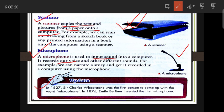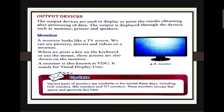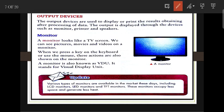In 1827, Sir Charles Wheatstone was the first person to come up with the word 'microphone.' And in 1876, Emile Berliner invented the first microphone.